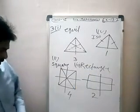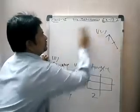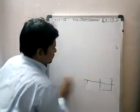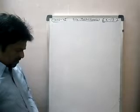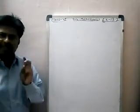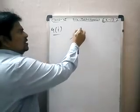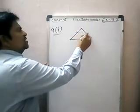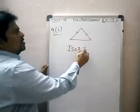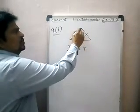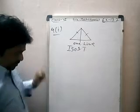Next, question number four: can you draw a triangle which has exactly one line of symmetry? Yes — an isosceles triangle has exactly one line of symmetry possible.